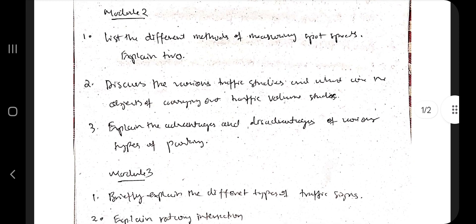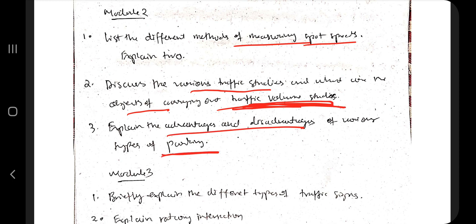From Module 2, the important questions are spot speeds. Measuring the spot speeds, two methods are there, and the various traffic studies and what are the objects of carrying out the traffic volume study. This is very important. Advantage and disadvantage of various parking, various types of parking you need to know.